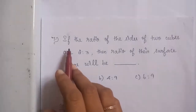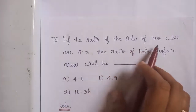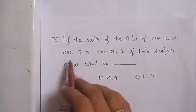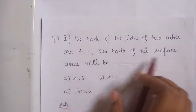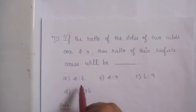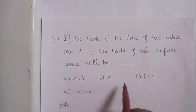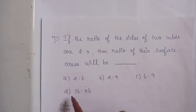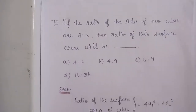Question No. 7: If the ratio of the sides of two cubes is 2:3, then the ratio of their surface areas will be dash. Option A: 4:6. Option B: 4:9. Option C: 6:9. Option D: 16:36.